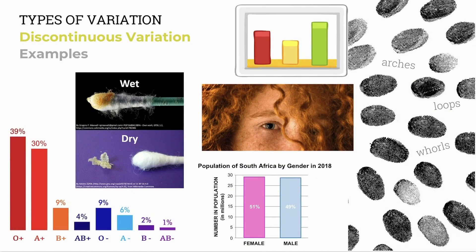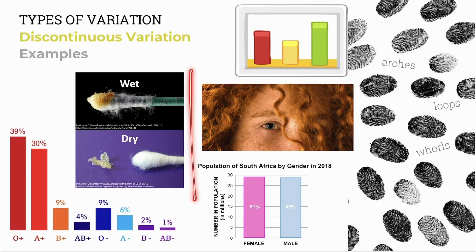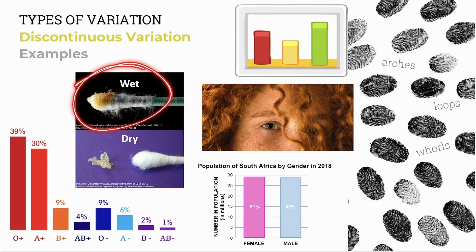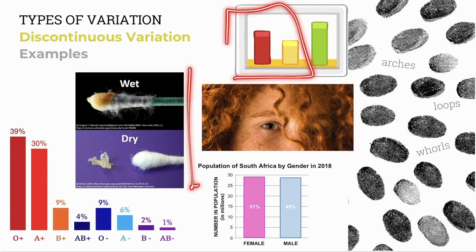Good examples of discontinuous variation are controlled by one gene and not affected by the environment. While tongue rolling and freckles are controlled by a number of factors, blood groups are clear examples with distinct groups. Gender composition of a population and fingerprints — with three distinct groups of arches, loops, or whorls — can also be represented in a bar graph. Another clear example is earwax in humans: wet, sticky, darker earwax is common in African and European populations, whereas dry, flaky, lighter earwax is common in East Asian populations. These are determined by one gene and illustrated in a bar graph.